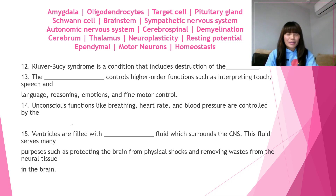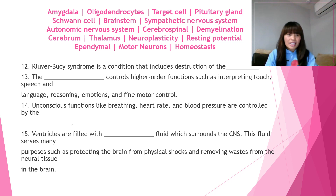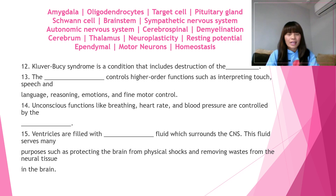Number thirteen: the blank controls higher order functions such as interpreting touch, speech and language, reasoning, emotions, and fine motor control. The answer for number thirteen is the cerebrum. The cerebrum controls higher order functions such as interpreting touch, speech and language, reasoning, emotions, and fine motor control.